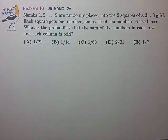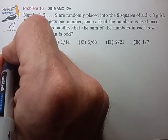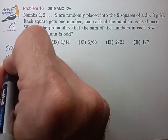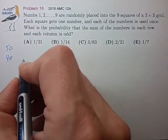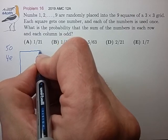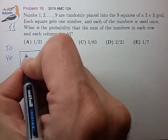That's a bit of a head-scratcher. Looks like we have five odd numbers and four even numbers. We want to place them in a 3x3 grid.